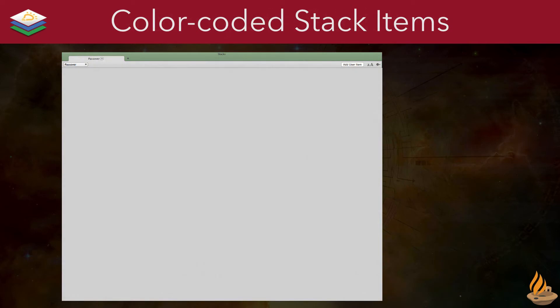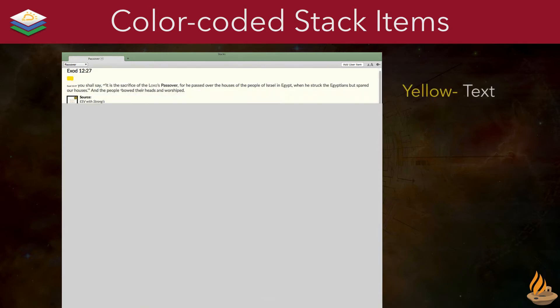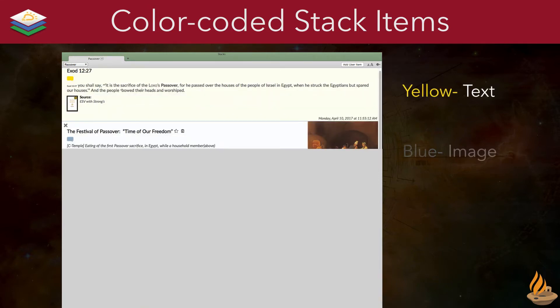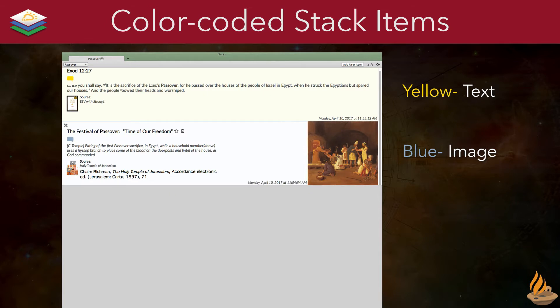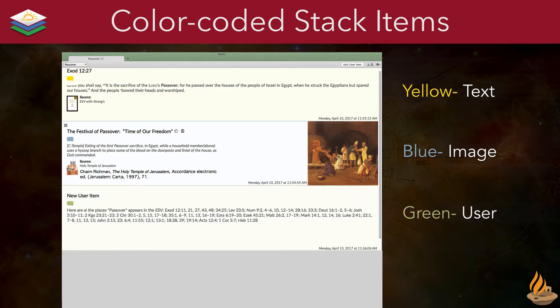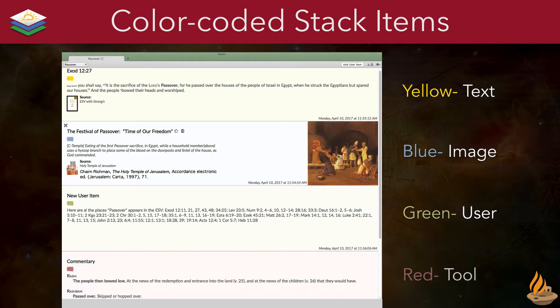There are four different categories of stack items. The background of each is color-coded for easy identification. A yellow background designates a text citation. Blue identifies the stack item as containing an image. Green indicates a user item, and red is a tool citation.